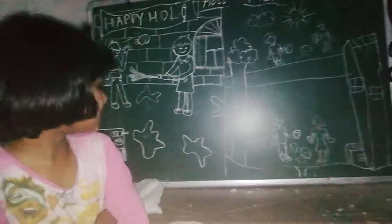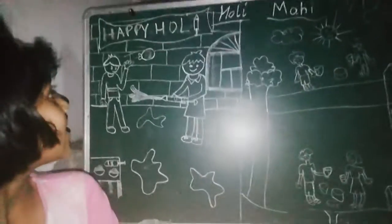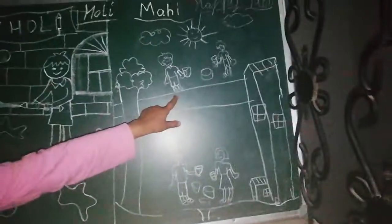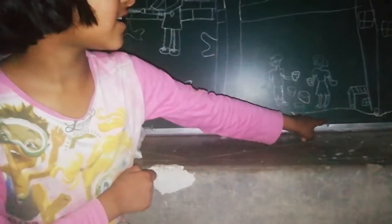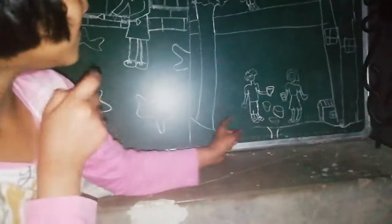Now let's explain about every character in the drawing. Who is this? This is Rohit. This is Rohit. This is Rhea. And then this is Ram.